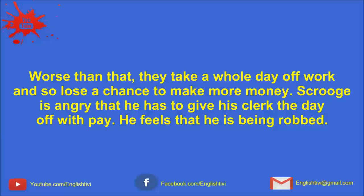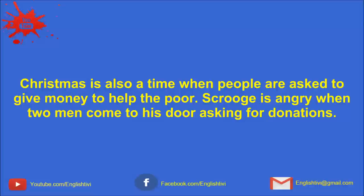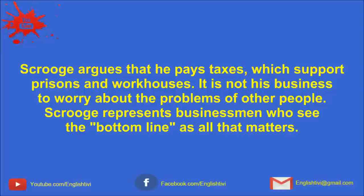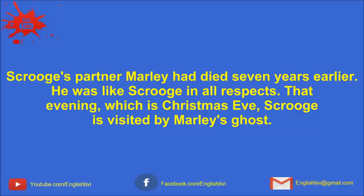Worse than that, they take a whole day off work, and so lose a chance to make more money. Scrooge is angry that he has to give his clerk the day off with pay. He feels that he's being robbed. Christmas is also a time when people are asked to give money to help the poor. Scrooge is angry when two men come to his door asking for donations. Scrooge argues that he pays taxes, which support prisons and workhouses. It is not his business to worry about the problems of other people. Scrooge represents businessmen who see the bottom line as all that matters. Scrooge's partner, Marley, had died seven years earlier.